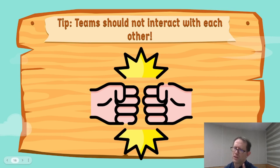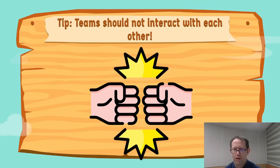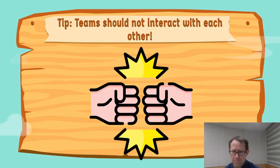Another note: generally, I recommend prohibiting teams from interacting with other teams — attacking, stealing, etc. If you allow these choices, the game will quickly devolve into an imaginary battle royale among players, effectively killing the game's spirit of lateral thinking and creativity.